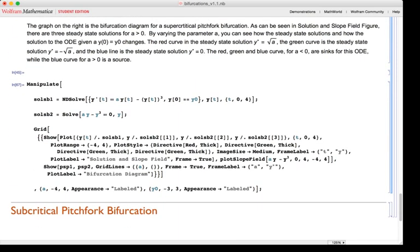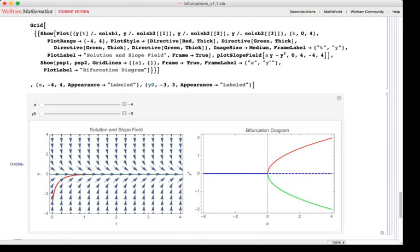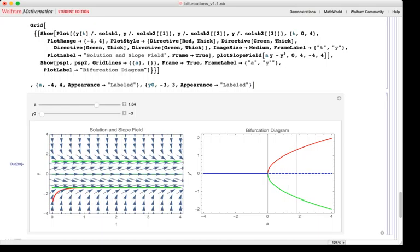The supercritical pitchfork bifurcation looks like this. A sink solution, more sink solutions. In addition to there being a source y equals 0. As I modify the parameter a, I can see how this changes the solutions to the differential equation. The steady-state solutions to the differential equation. When I modify the parameter y not, this changes to where the solution decays to.